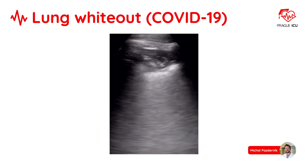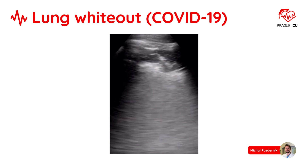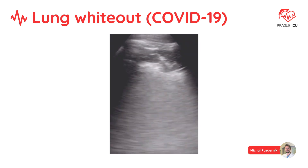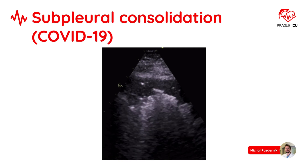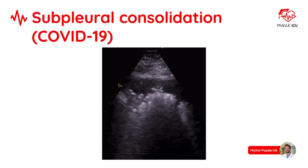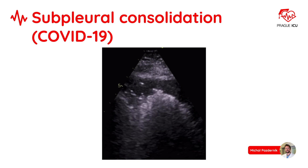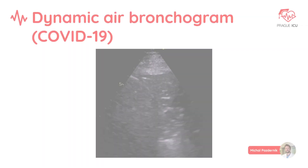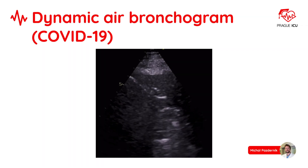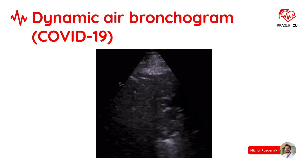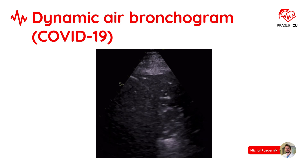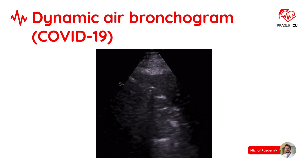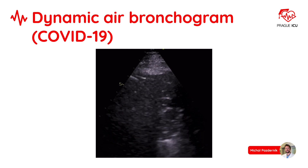A typical picture of confluent B-lines is the waterfall sign. Here we can appreciate typical subpleural consolidations. And here we can see dynamic air bronchograms that move centrifugally with respiration — they represent fluid mixed with air inside large bronchi and indicate a non-retractile consolidation.